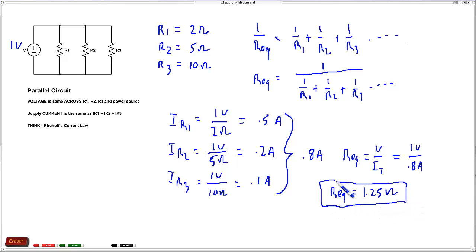So that's the equivalent resistance for those three resistors. Now there's a couple of checks. Well, actually there's one check and that one check is this resistance should be lower than the lowest resistor that we have. And it turns out it is, it's less than 2, which is a good sign, that means you probably got the right answer.